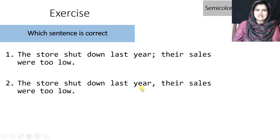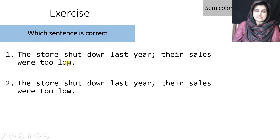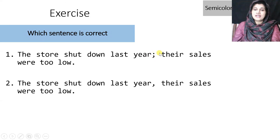Exercise: which sentence is correct? (1) 'The store shut down last year; their sales were too low.' (2) 'The store shut down last year, their sales were too low.' Both sentences are complete independent clauses, so we should combine them through a semicolon. The comma in option two creates a run-on sentence — we cannot join two independent clauses through a comma; we must use a semicolon or a coordinating conjunction.